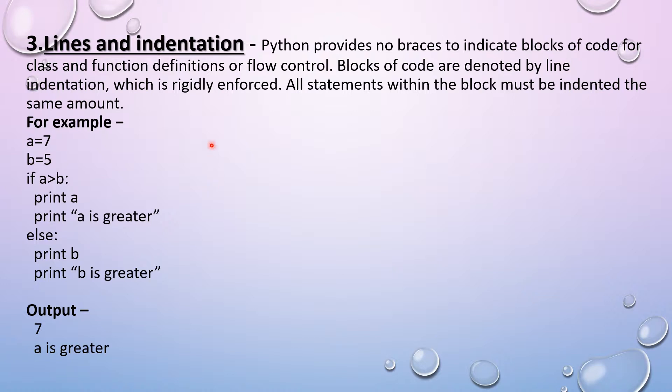So we will see this by an example here. So here I've written one example, a is equals to seven, b is equals to five. Then we have used if else loop. Here, the condition is given a is greater than b and two block of the statement is passed. The statements are print a and print a is greater. Since we have used here one space in both of these statements, this shows that this both statement is a block of code of if statement. Again, we have used else here and given one space in both the statement. This also shows that this block of code belongs to else statement. Thus, we get output seven and a is greater. Since a is greater than b and this block of code belongs to if statement.